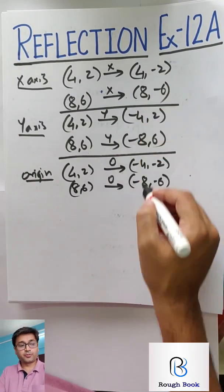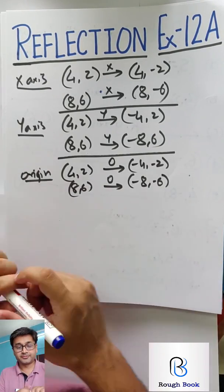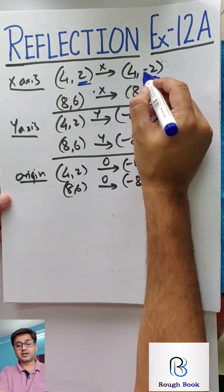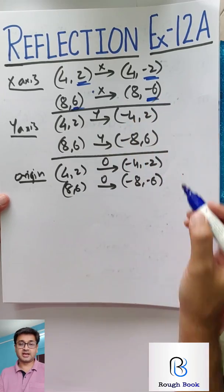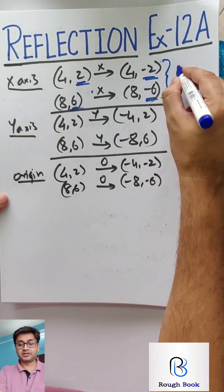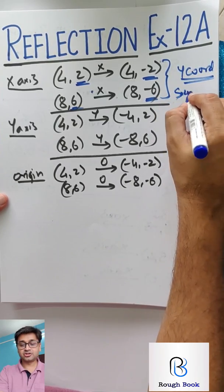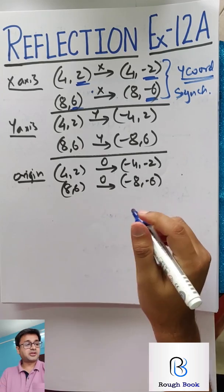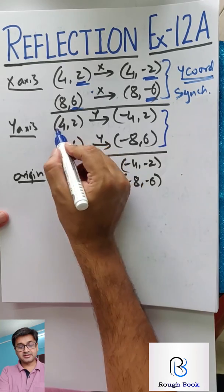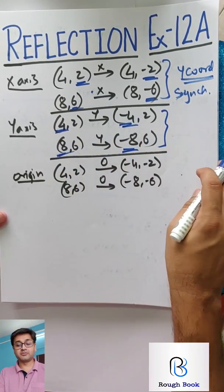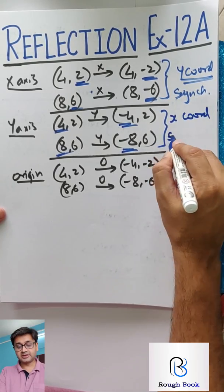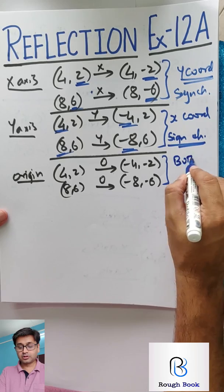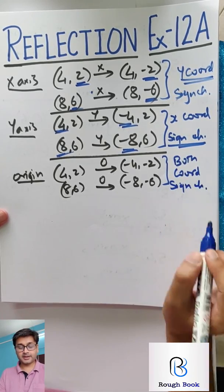Now, I want you to focus on these points and the outcome and generate some general derivatives. So if you look at this carefully, 4, 2 has become 4 minus 2. So what is the change? The change is in this, the sign. Plus has become minus. So when it is reflecting in x-axis, what is happening is, y-coordinate's sign changes.